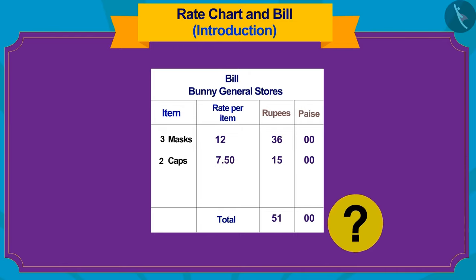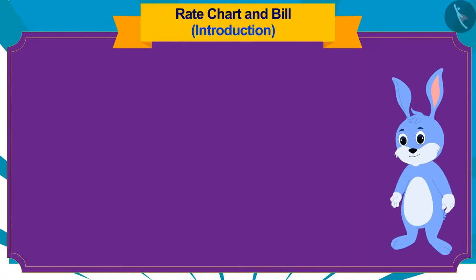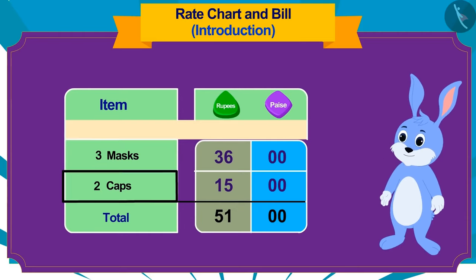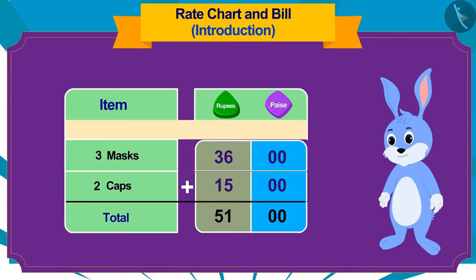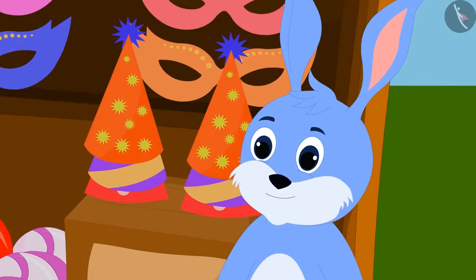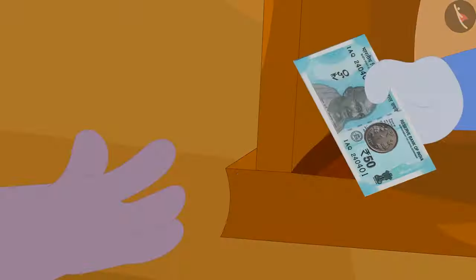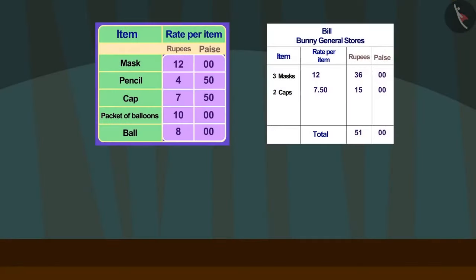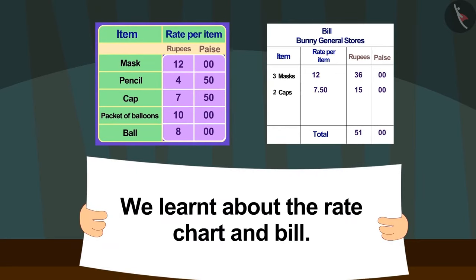Can you tell how Banni wrote this total price? To find out, Banni added the cost of 3 masks and 2 caps. If we add 15 to 36, we get 51 rupees. Banni explained the bill to Appu in exactly the same way. Now Appu gave 51 rupees to Banni and happily returned to his house with the purchased items. Children, in this video we learned about the rate chart and the bill. In the next video, we will learn more about it with some interesting examples.